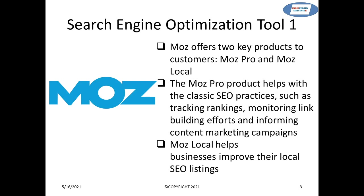Moz Local essentially helps you build the listings for your SEO on Facebook, on Google, and wherever you want across all social channels. It helps you build your profile on search. So it does the basics of search engine optimization. But if you go for Moz Pro, that's where the main game starts.